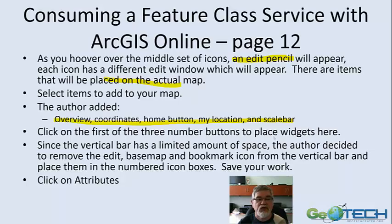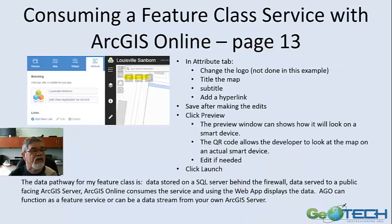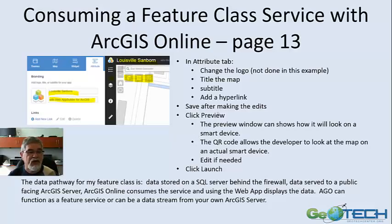Here are the ones I added to the map: an Overview Map widget, Coordinates so I always know where I'm at, a Home button to return to the original default location, My Location which requires GPS, and a Scale Bar. I also added to the numbered button positions: a Bookmark widget, the Basemap widget, and a Legend widget — I moved the Legend widget over there. I'm branding my map as Louisville Sanborn. You can have a QR code created to take you to this map. This is building out that production quality map, giving you a very usable map for yourself.